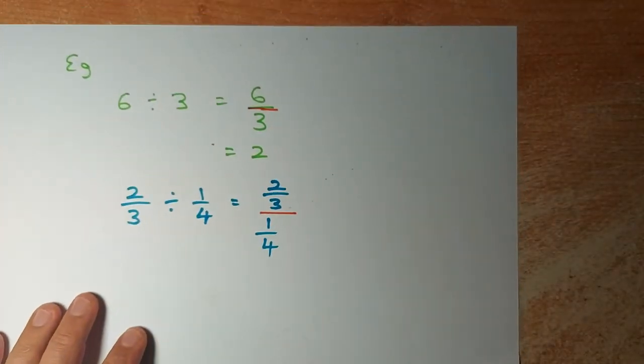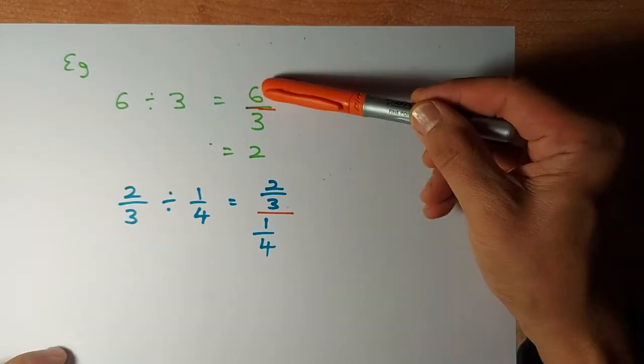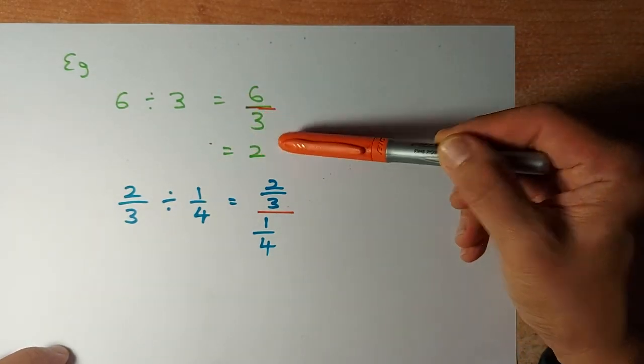Suppose we have a number like 6 divided by 3, it means 6 over 3 and the answer is 2. So similarly,